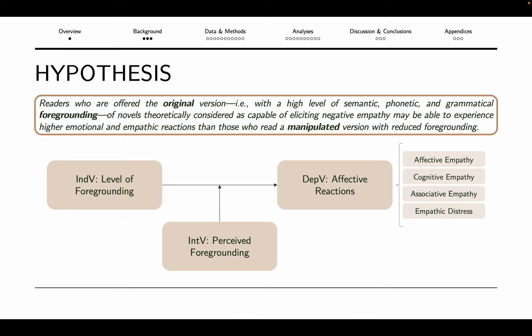Drawing upon prior theoretical and empirical studies in foregrounding, I hypothesize that readers who are offered the original version — with a high level of semantic, phonetic and grammatical foregrounding — of novels theoretically considered as capable of eliciting negative empathy, may experience higher emotional and empathic reactions than those who read a manipulated version with reduced foregrounding.